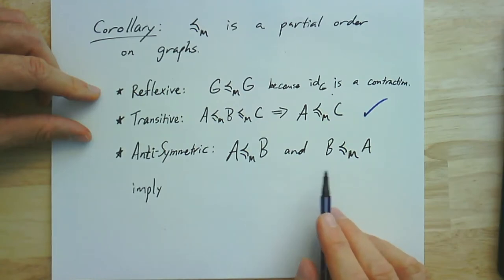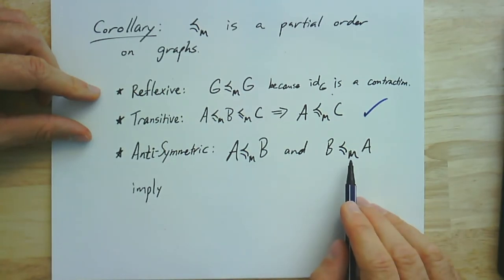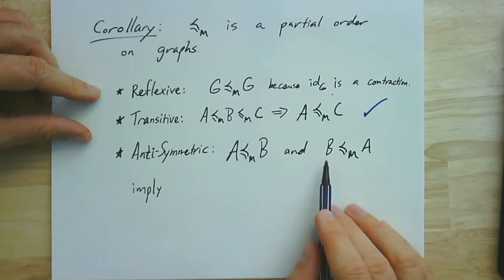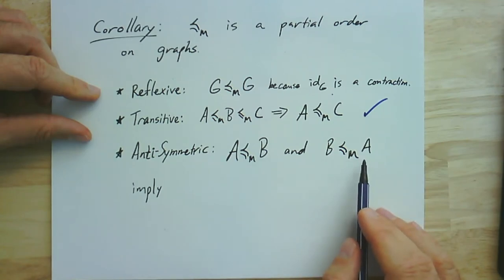And the last one we would check is antisymmetry. And let's be a little careful. Usually with antisymmetry, we say that, okay, if the relation holds in both directions, then they have to be the same graph. And sameness here is going to mean isomorphic.